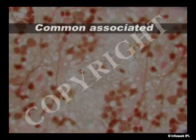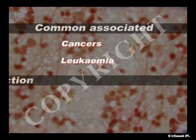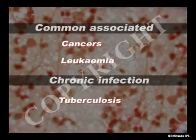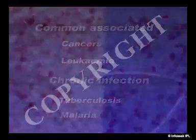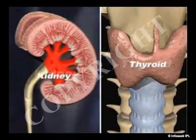Due to deficient synthesis of blood cells, anemia is a common associated finding in cancers, leukemia, and chronic infections like tuberculosis and malaria. It is also present in chronic diseases of organs like kidney and thyroid.